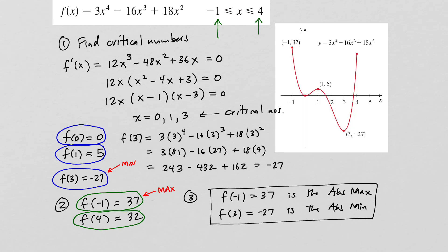Here is a picture of that function. It is a polynomial function, and you can see very clearly the absolute minimum is down here — f of 3 equals negative 27 — and the absolute maximum occurs at the left endpoint: f of negative 1 equals 37.